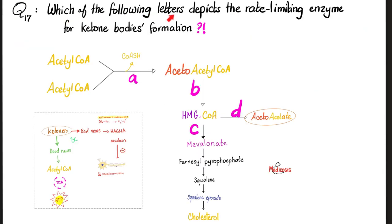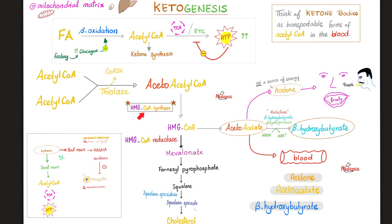Next, which of the following letters depicts the rate-limiting enzyme for ketone body formation? What do you think? Is it enzyme A, B, C, or D? Please pause and let me know. Well, the rate-limiting enzyme in ketogenesis is HMG-CoA synthase. If I want to synthesize HMG-CoA, it means that it will come before HMG-CoA. So the correct answer here is B. Enzyme B represents HMG-CoA synthase, which is the key rate-limiting step in ketogenesis or ketone body formation.